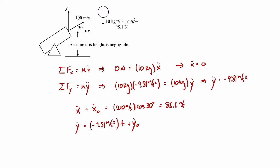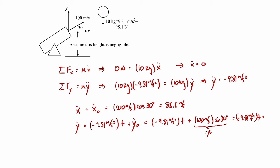Substituting the initial y velocity — 100 m/s × sin(30°) — gives ẏ = −9.81 m/s² × t + 50 m/s. So that's our y velocity as a function of time, and 86.6 m/s is our x velocity.